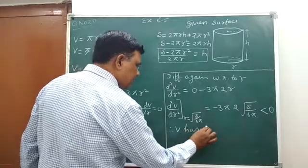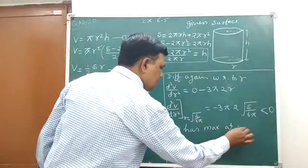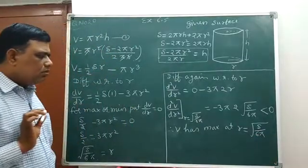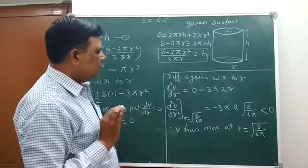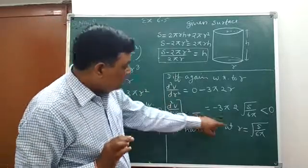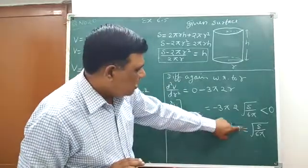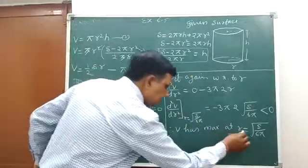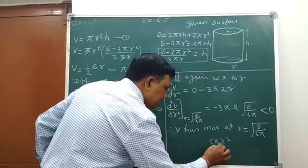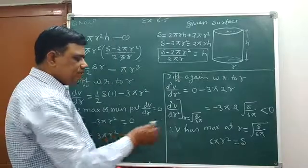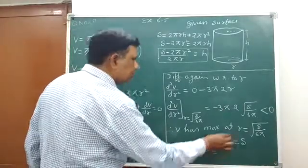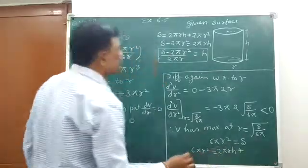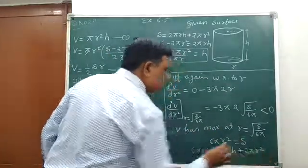Therefore we can say that volume V has maximum at r equals square root of S upon 6π. Now we have to change this relation in r and h, so 6πr² equals, putting the value of S is 2πrh plus 2πr². Got it?